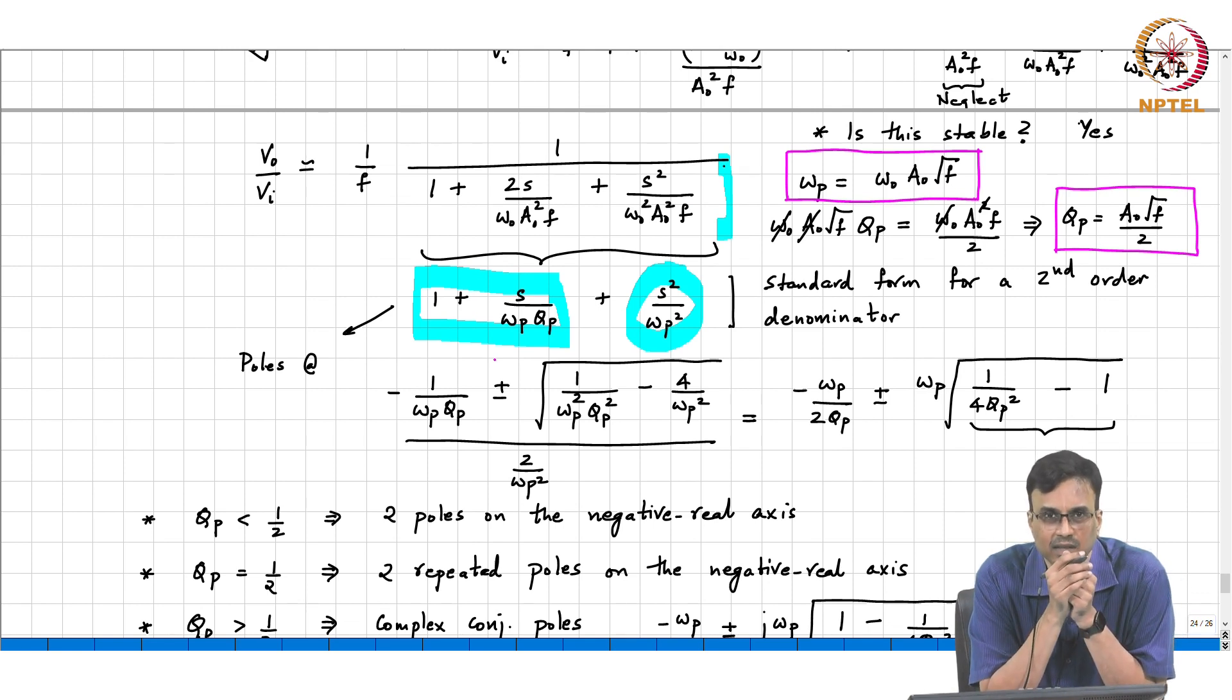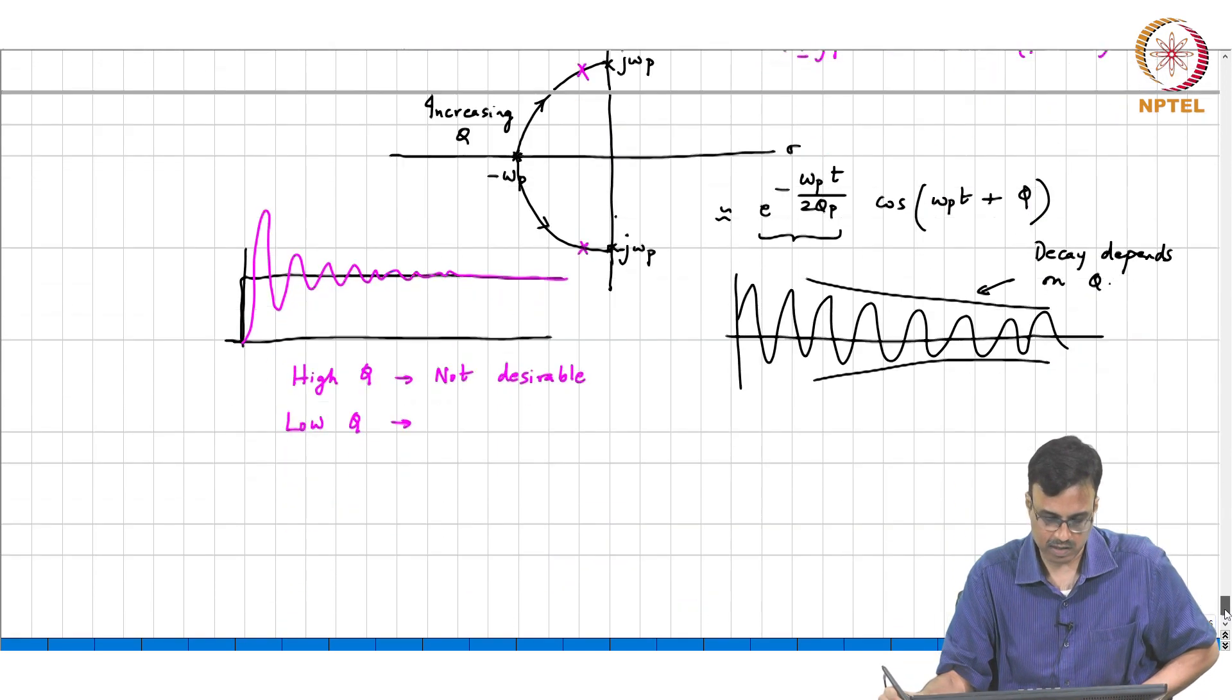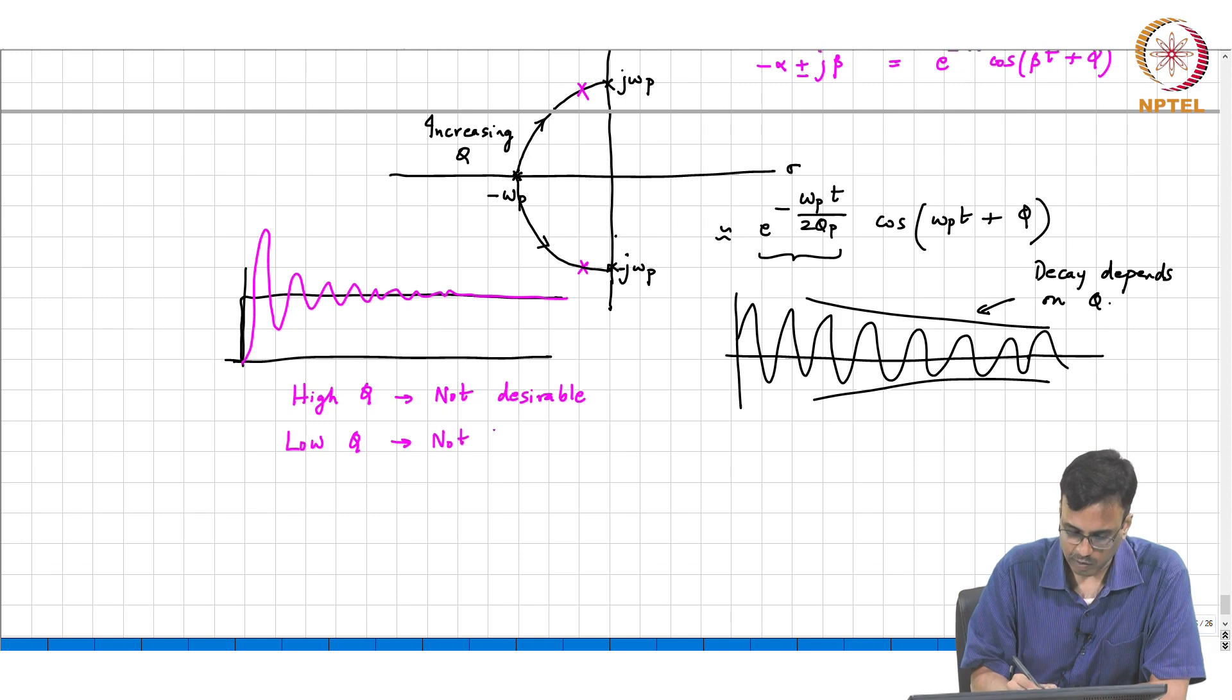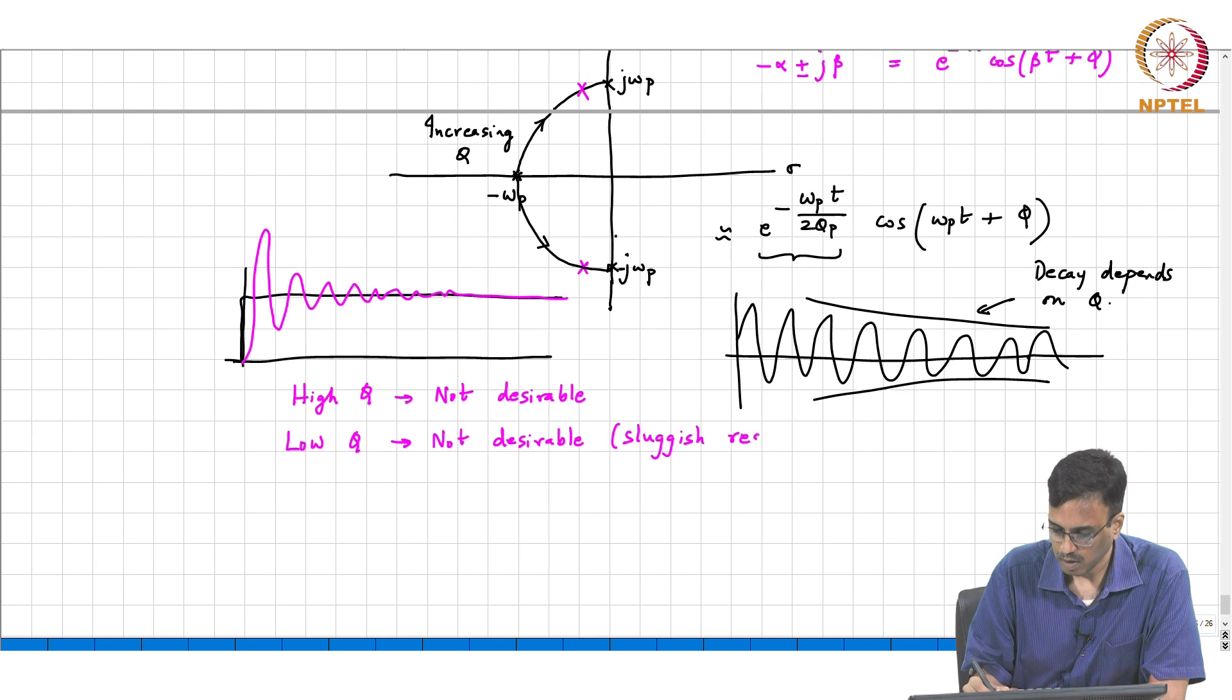The omega p is inconsistent with what you said earlier - we said that it is going to become very slow. And why is it slow? Because the effective bandwidth is omega p times q p, and because q p is very low, the effective bandwidth is very very small. So the response of the system will be very sluggish. Not desirable - you get a sluggish response.